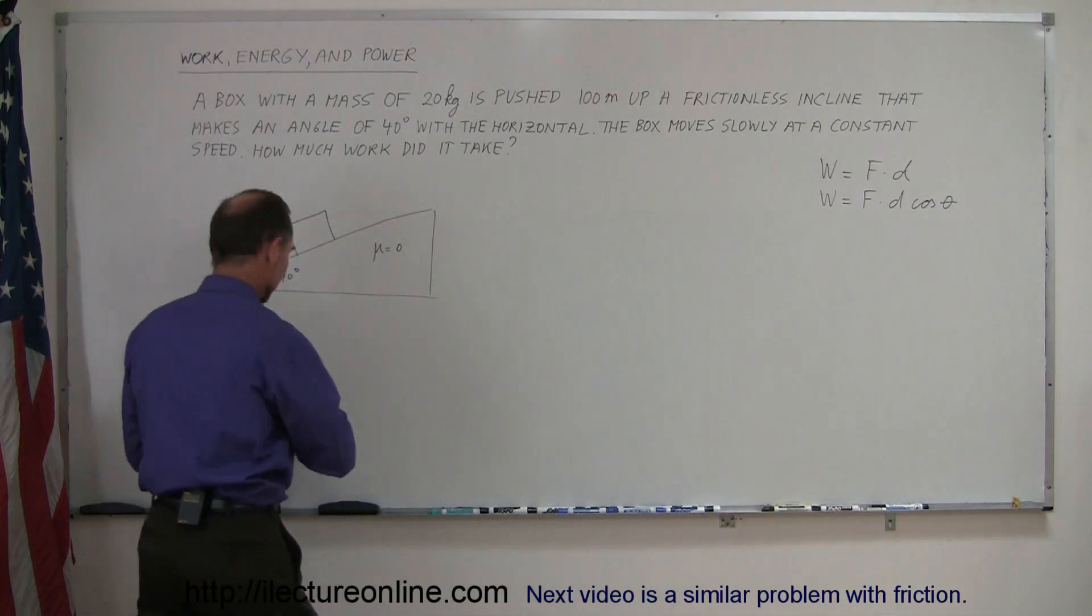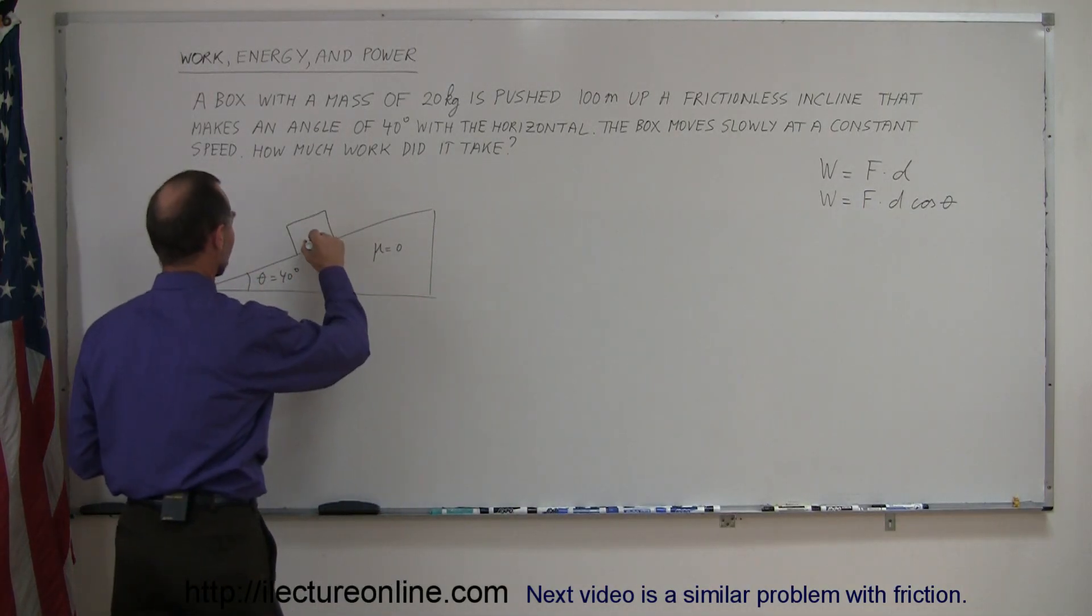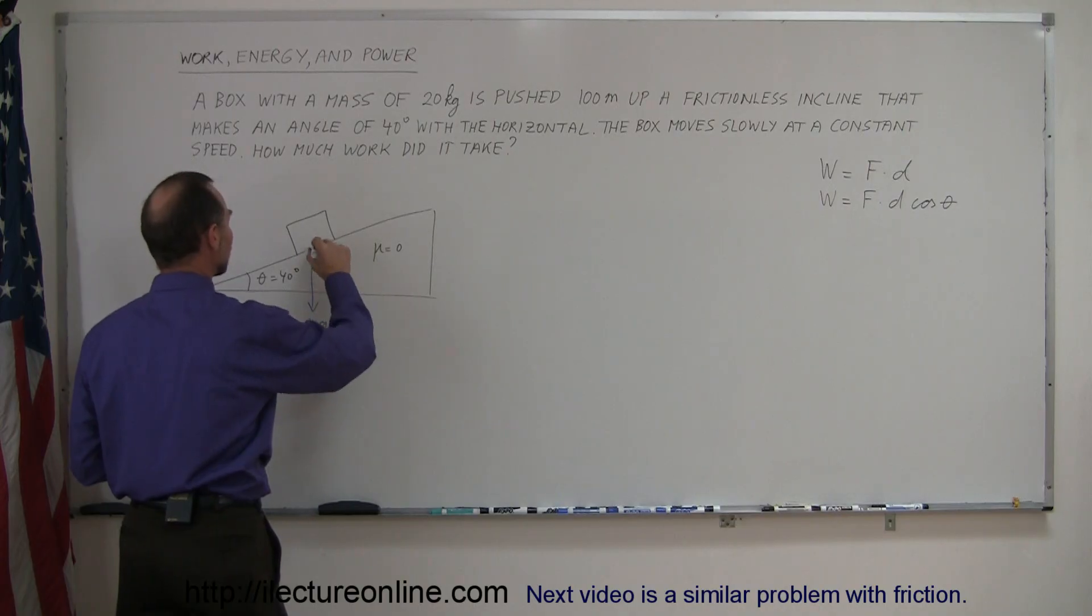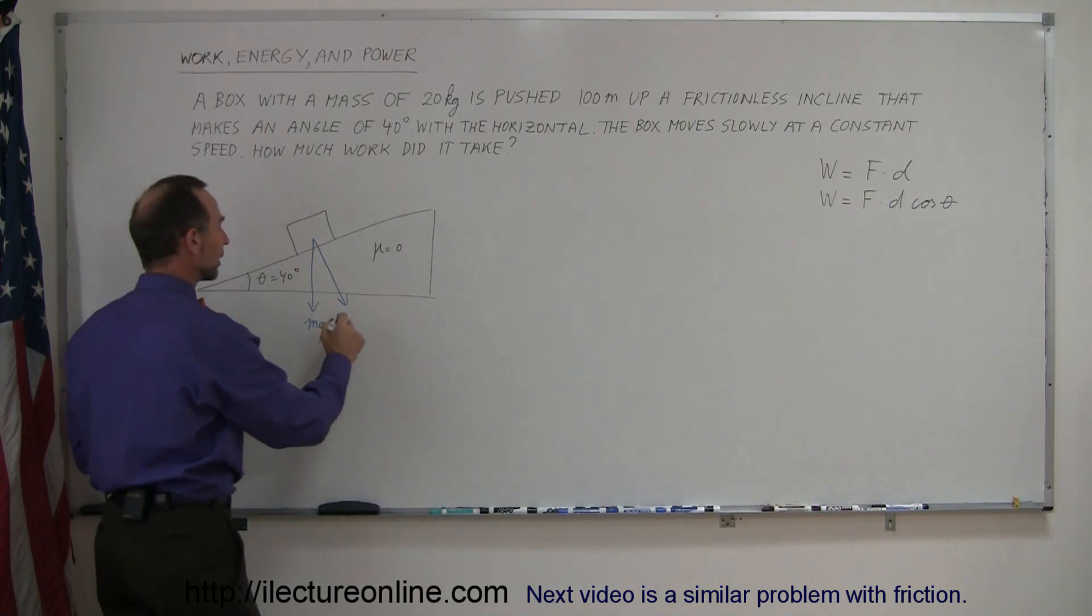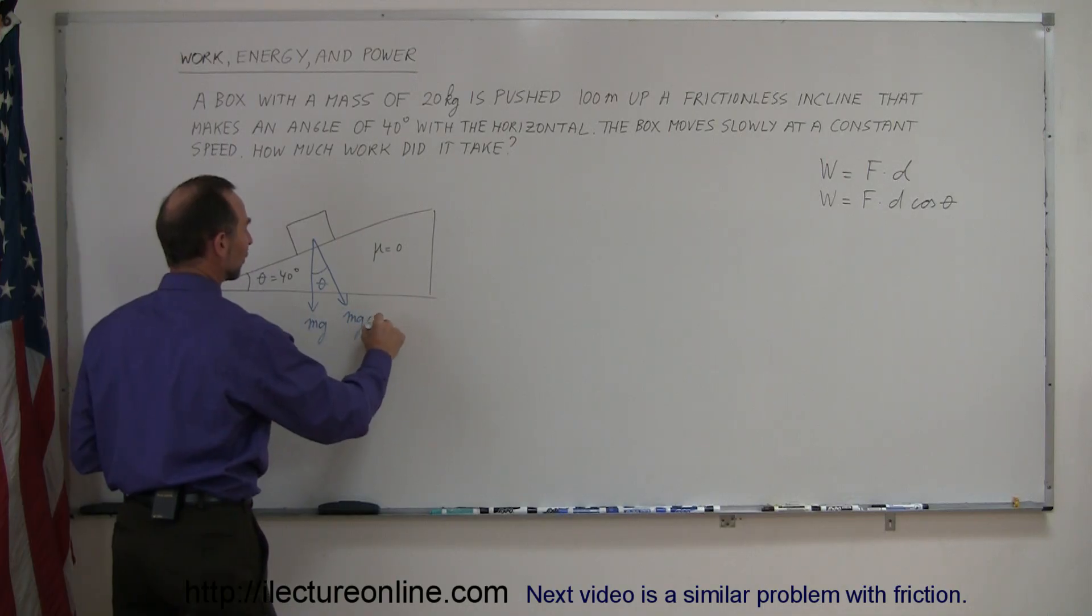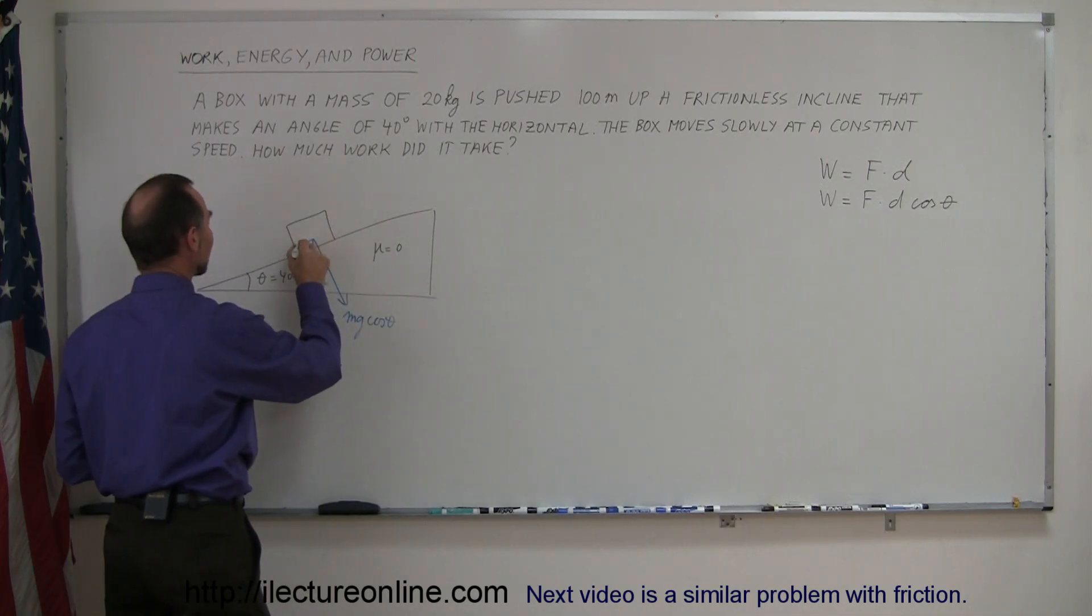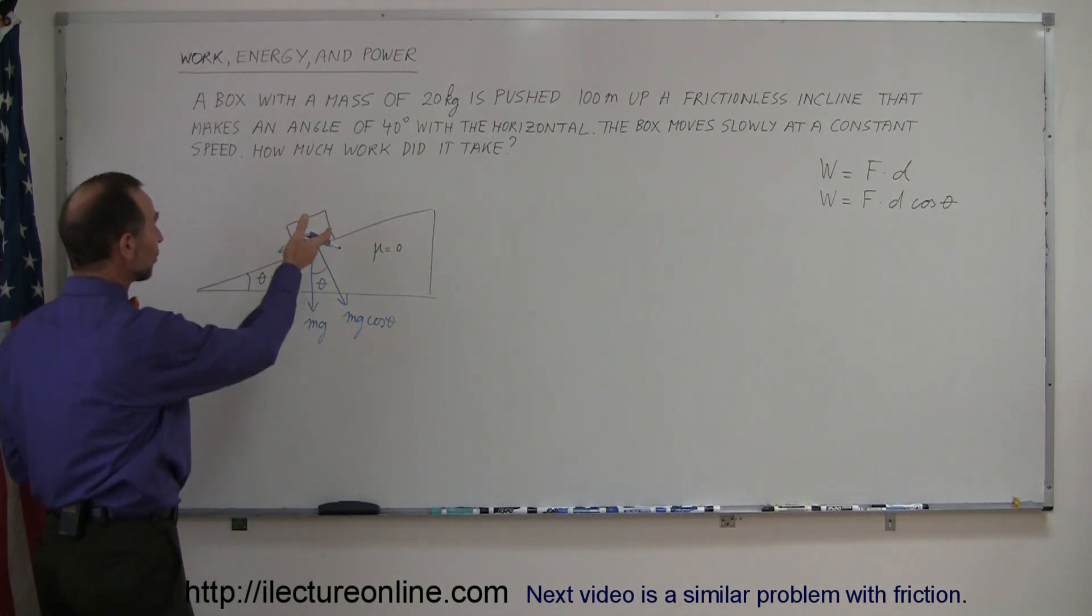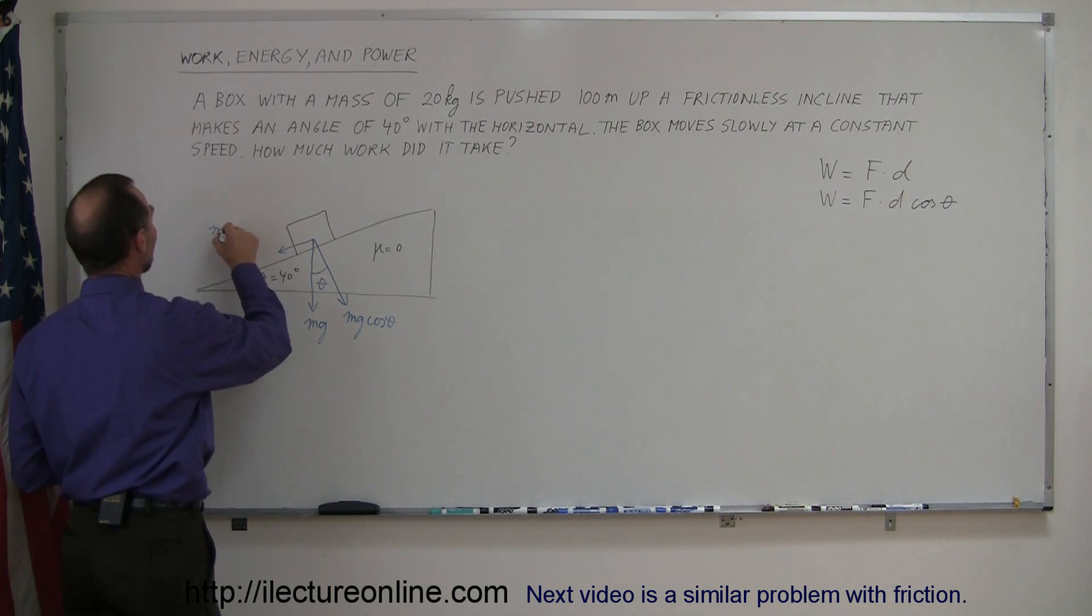Let me draw the forces of gravity. There's the weight of the box, mg, which means there is a component perpendicular to the incline. This angle theta is the same as this angle theta right there. So we can write this as mg cos θ. And here we have the corresponding component of the weight which is parallel to the incline, which we can write as mg sin θ.